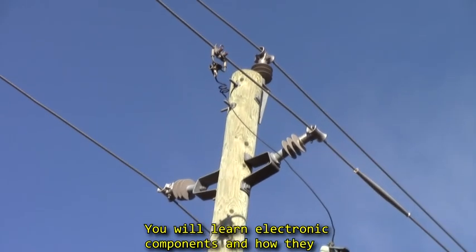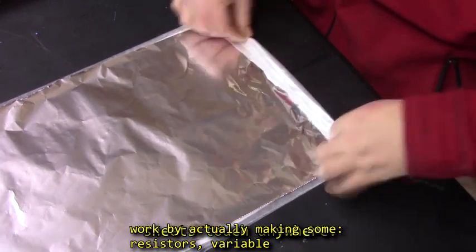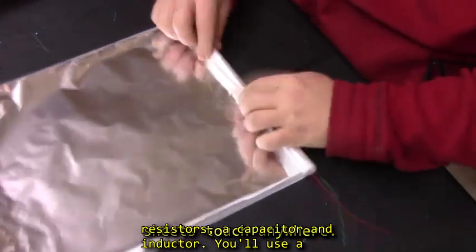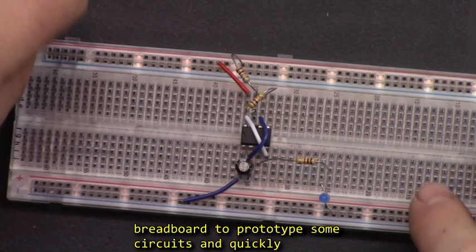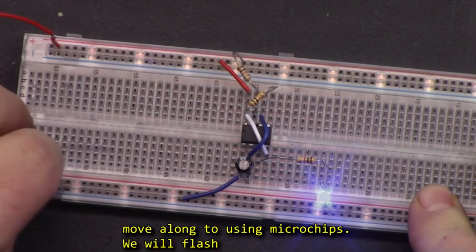You will learn electronic components and how they work by actually making some. Resistors, variable resistors, a capacitor and inductor. You'll use a professional electronics engineer's tool called a breadboard to prototype some circuits and quickly move along to using microchips.